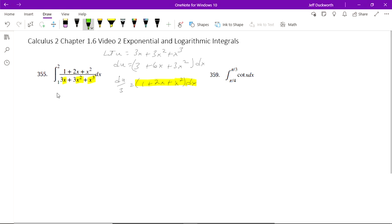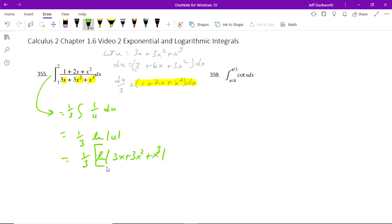So therefore this equals the integral of 1 over u du. Excuse me, 1/3 out front. So that's 1/3 ln of u. And when we put u back in, we've got 1/3 ln of 3x plus 3x squared plus x cubed, all evaluated between 1 and 2.